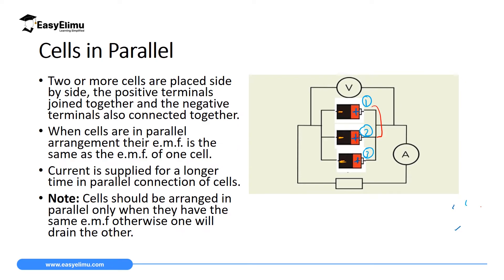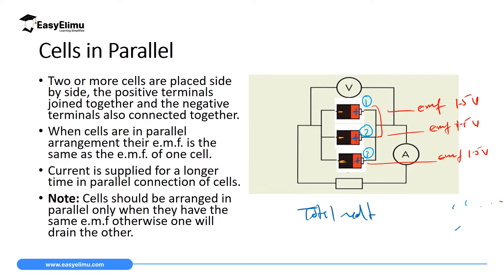Now when cells are in parallel arrangement, their EMF or electromotive force is the same as that of one cell. If the first cell has an EMF of 1.5, the second cell has an EMF of 1.5, and the third cell also has an EMF of 1.5 volts, then the total voltage in this arrangement is going to be like that of one cell — so here it is going to be 1.5 volts.